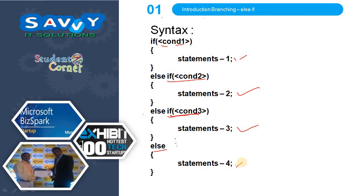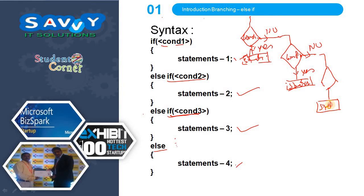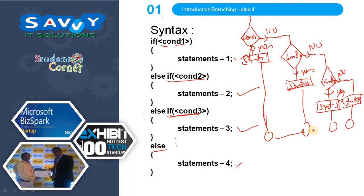Now I will explain the flowchart. If condition 1 is true, statement 1 executes. If false, we go to condition 2 and statement 2. If that is also false, we check condition 3 and statement 3. If that is also false, we reach statement 4 in the else block. All conditions are linked in a chain. This is the flowchart representation of the Elsif Ladder.